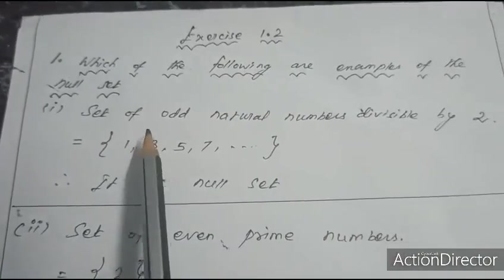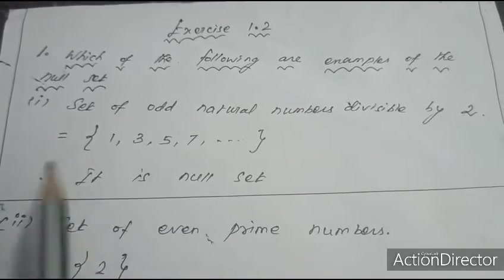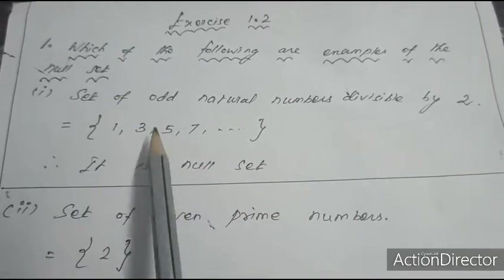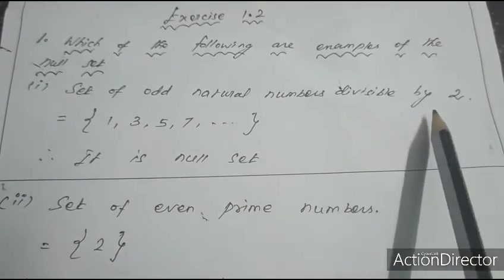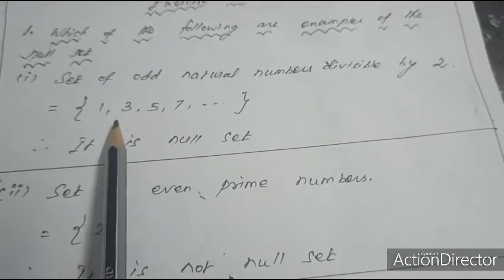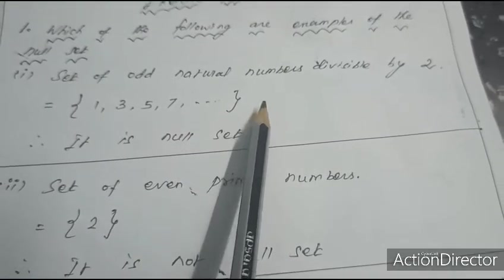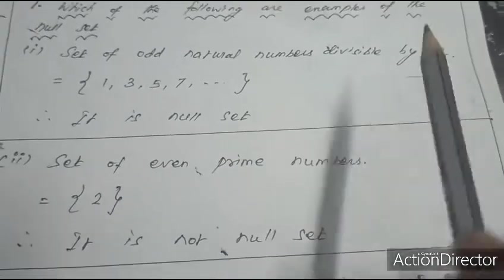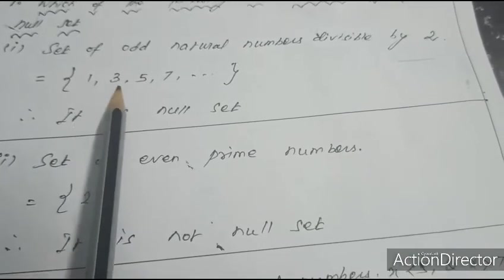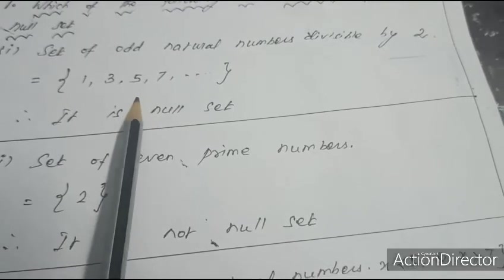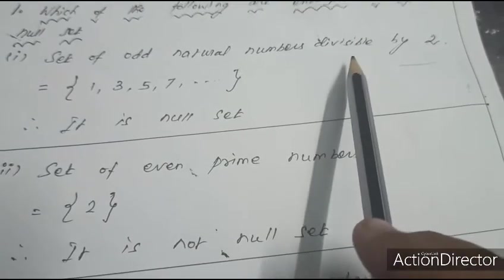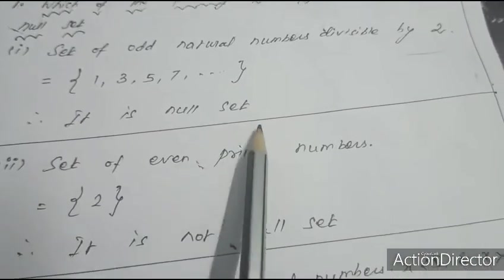Exercise 1.2: Which of the following are examples of the null set? First question: the set of odd natural numbers divisible by 2. Odd natural numbers are 1, 3, 5, 7, 9, etc. Is 1 divisible by 2? No. Is 3 divisible by 2? No. Is 5 divisible by 2? No. Therefore, odd natural numbers are not divisible by 2, so it is a null set.